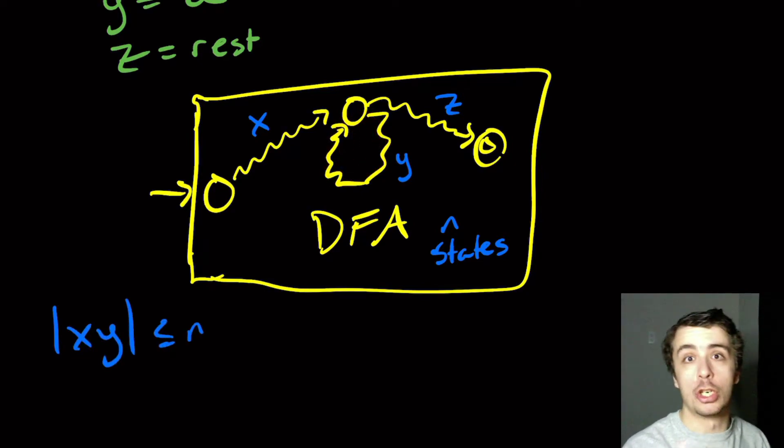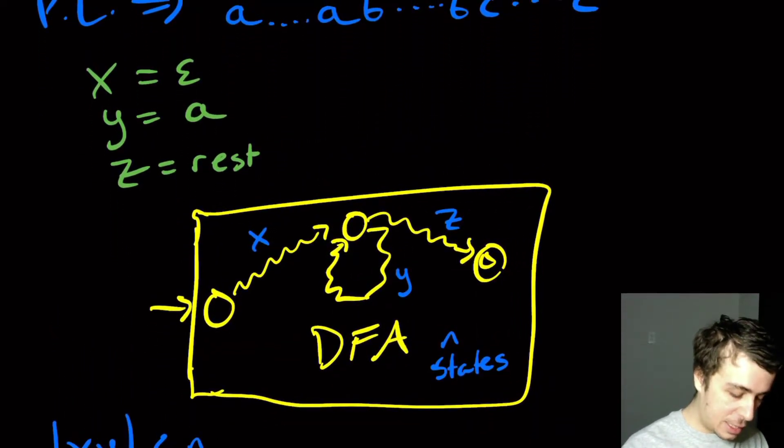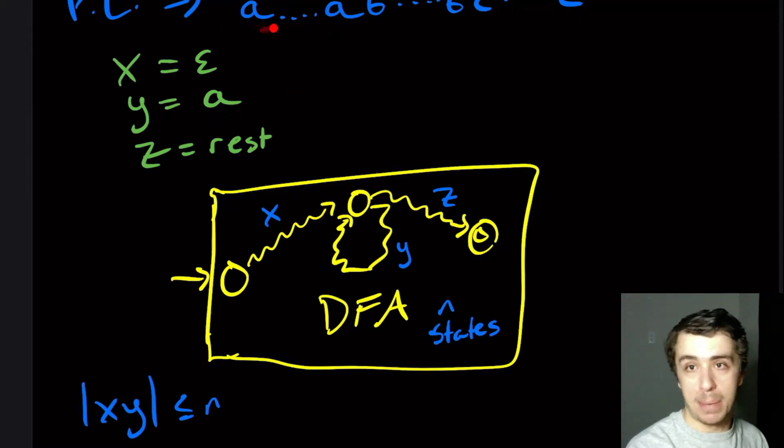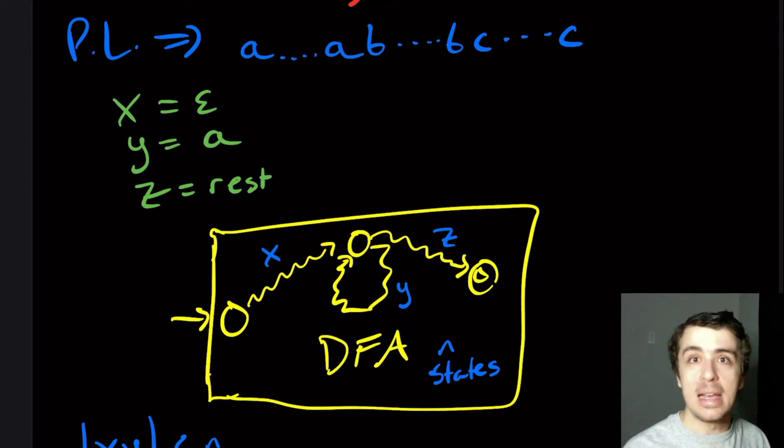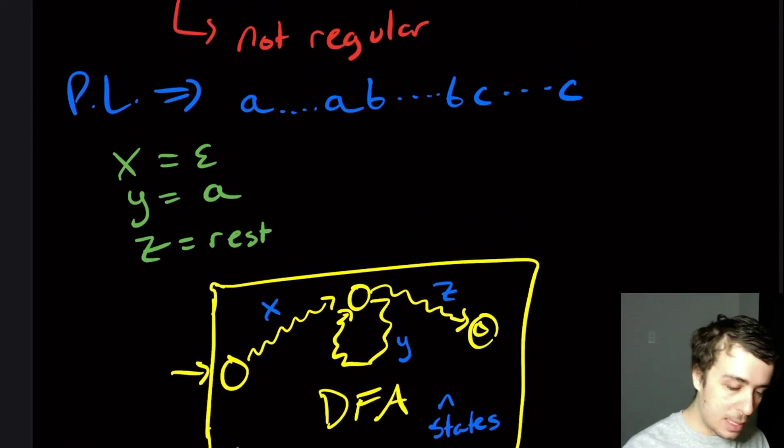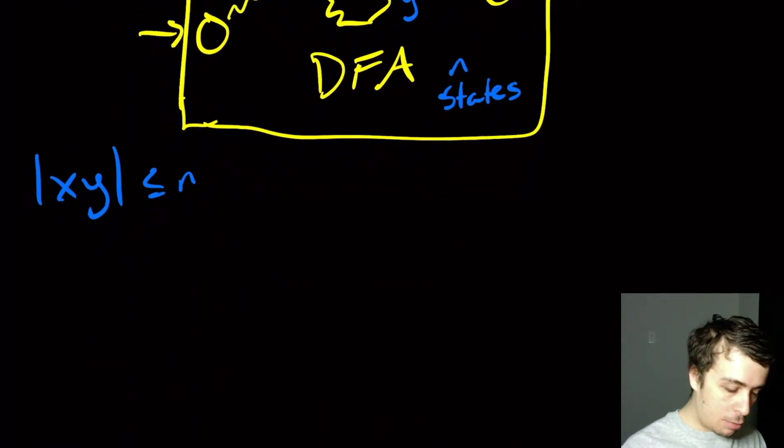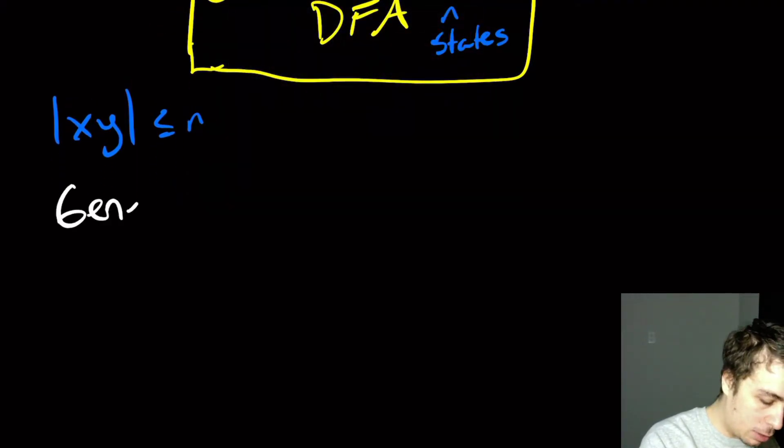And so the fact that x, y has length at most n right here, this is kind of a problem in this scenario, because it forces the y part to be pumped near the beginning, and we found a decomposition that allowed us to get out. Whereas if we instead allowed y to pump over here, then that is better, because that allows us to pump out of the language by being only in one of the sections. So I want to talk about something which I call the generalized pumping lemma.